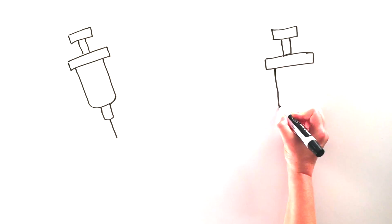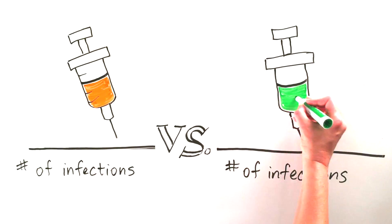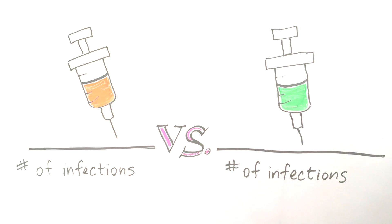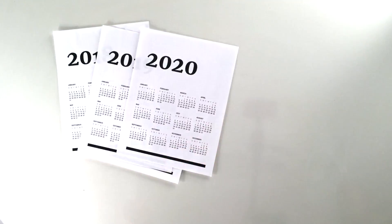To see if the vaccine works, researchers will compare the rate of HIV infection in people who received the vaccine with those who received the placebo. Final study results are expected in about five years.